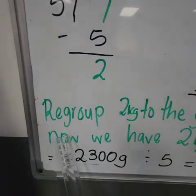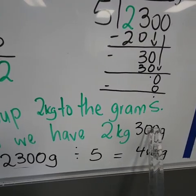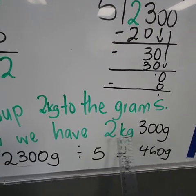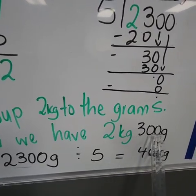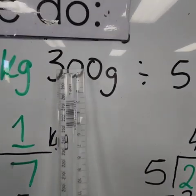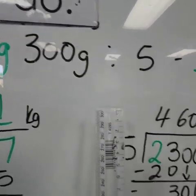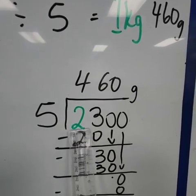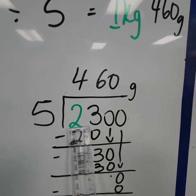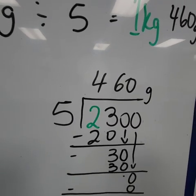We need to regroup the 2 kilogram to the grams. So now we have 2 kg, 300 g, or 2 kg and 300 grams. Because remember, we still have our kilograms here. So if now we are regrouping the 2, because 2 kg is equal to 2,000 grams.